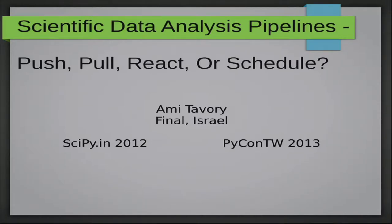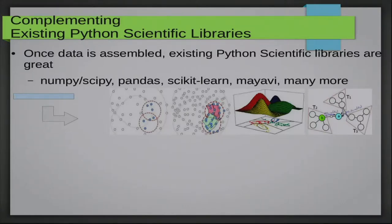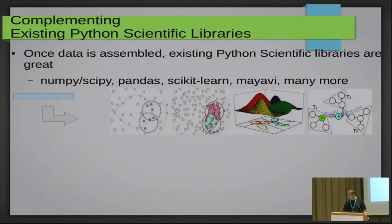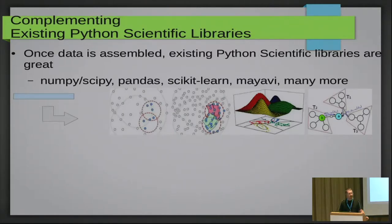Hello again. I'd like to talk about the proper way to implement scientific data analysis pipelines. If you do any data analysis in Python, once you've assembled your data and loaded it into memory in a nice data structure such as a NumPy array, Python offers tremendously powerful libraries to analyze it, find patterns, and plot it — NumPy, SciPy, Pandas, Scikit-Learn, and many others.